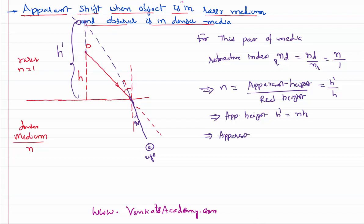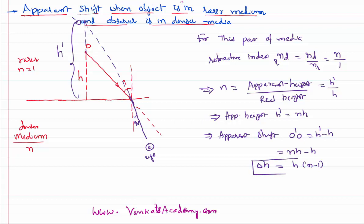Therefore, what is the apparent shift? The object is at O but appears to have shifted to O dash. So the shift O dash to O equals h dash minus h, which is n·h minus h. Therefore the apparent shift delta h equals h times (n minus 1). This is the equation for the apparent shift.